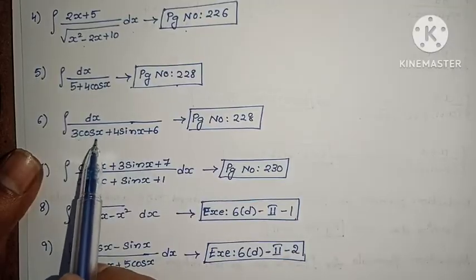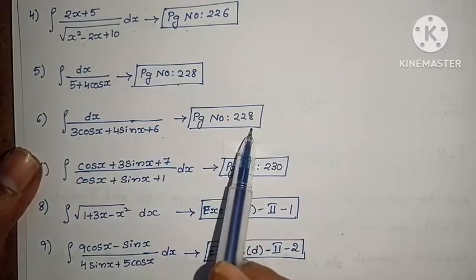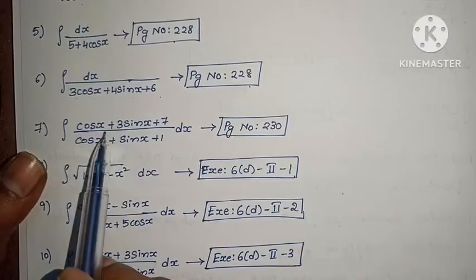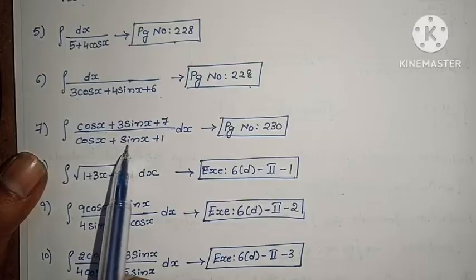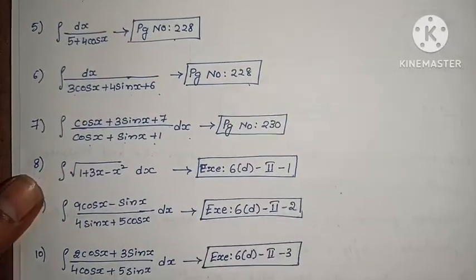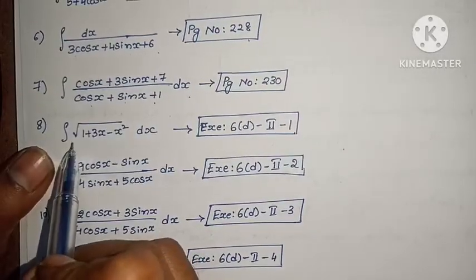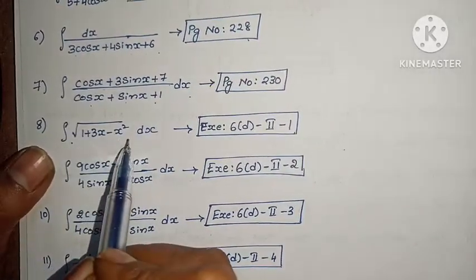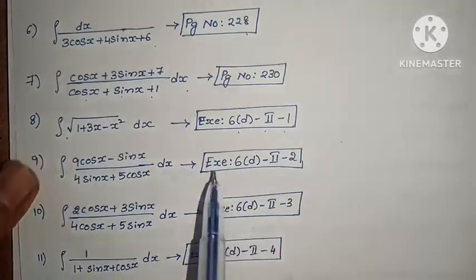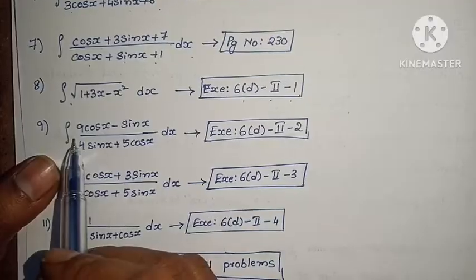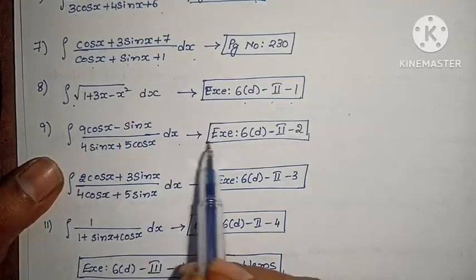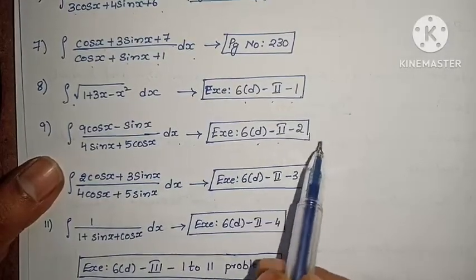Next: integral of dx/(3 cos x + 4 sin x + 6), page number 228, example problem. Next: integral of (cos x + 3 sin x + 7)/(cos x + sin x + 1) dx, page number 230, example problem. Next: integral of √(1 + 3x − x²) dx, exercise 6d, Roman numeral 2, 1st problem. Next: integral of (9 cos x − sin x)/(4 sin x + 5 cos x) dx, exercise 6d, Roman numeral 2, 2nd problem.